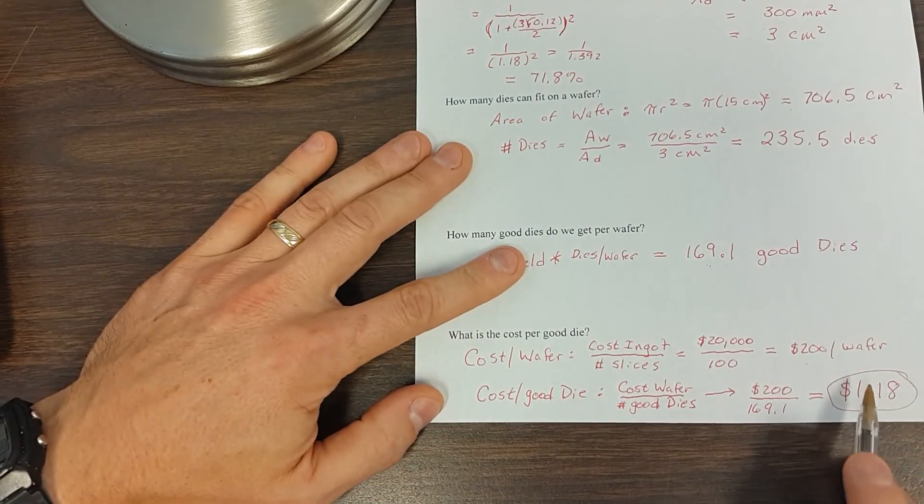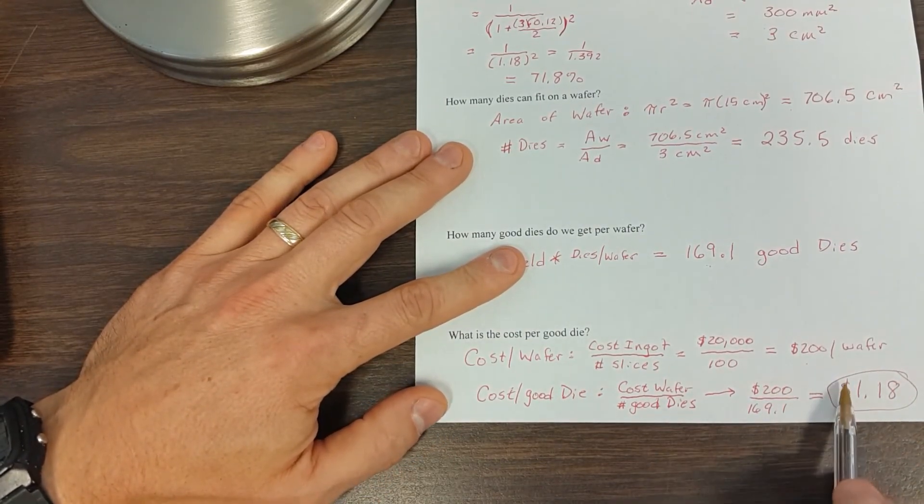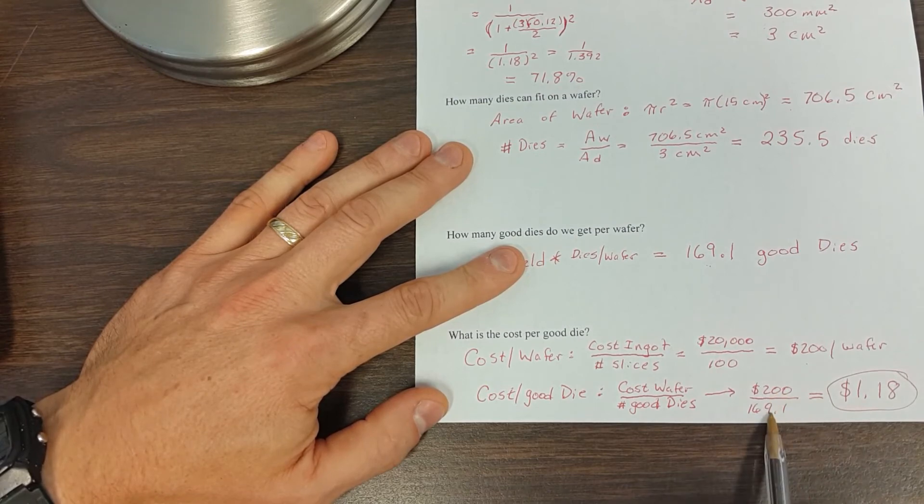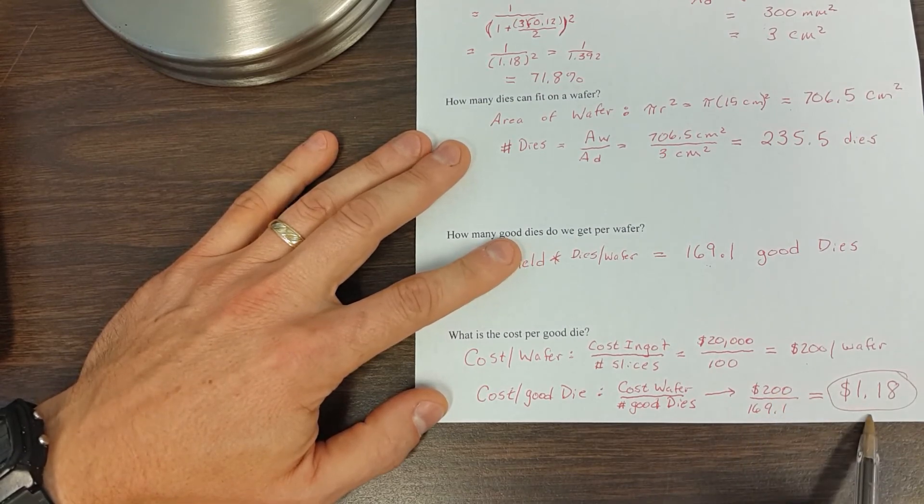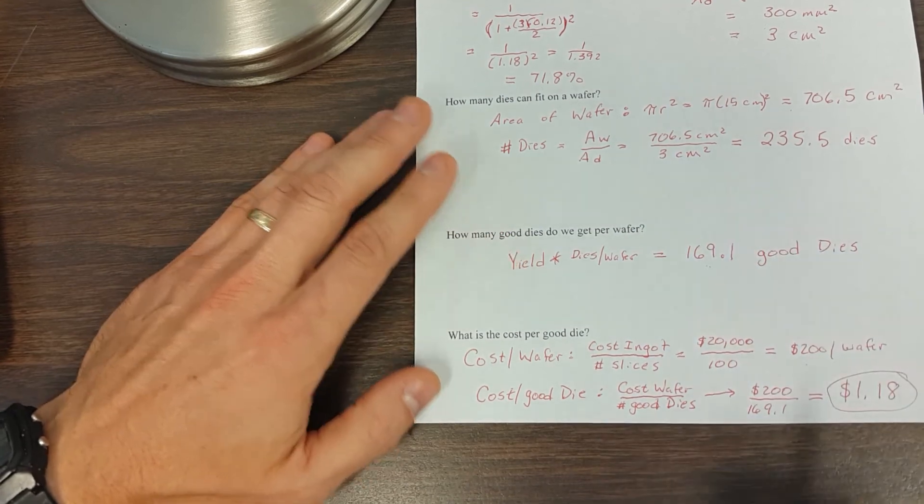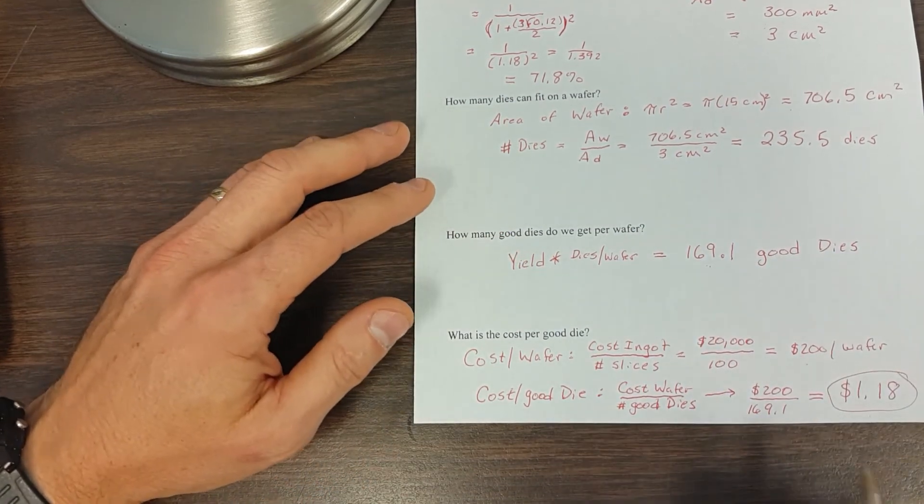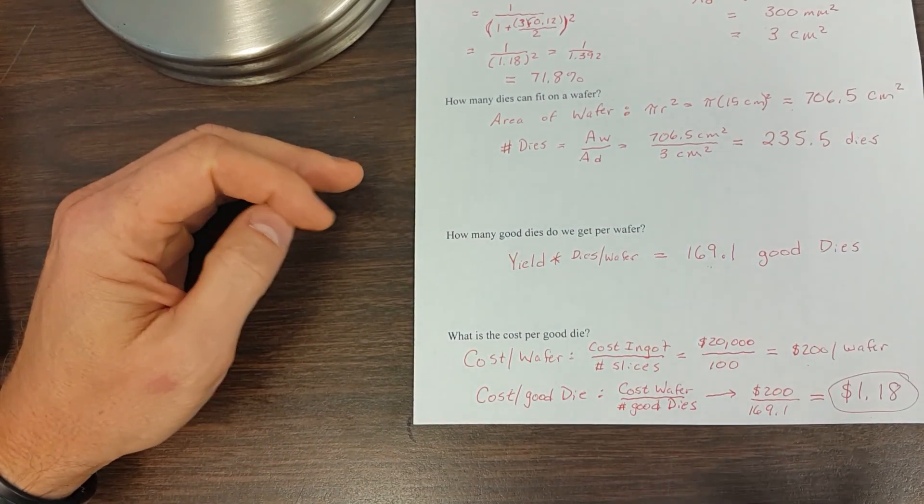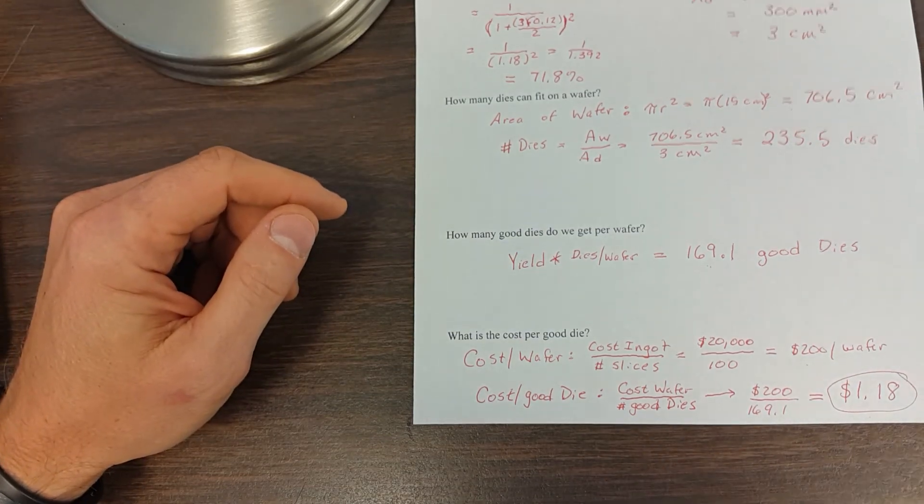Oops, I didn't realize it went out of view. So $200 divided by 169, we get $1.18. And that is the first problem. We'll see more in-class exercises when we get to lecture on Wednesday. Thanks for watching. Bye.